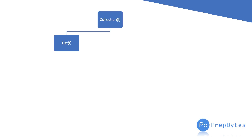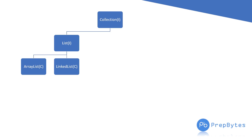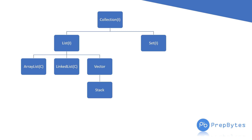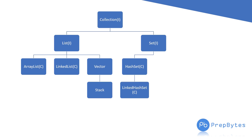Let's have a recap of what we have seen till now. We have seen the Collection interface, List interface, and the implementation classes of List interface: ArrayList, LinkedList, Vector, and Stack. We have also seen what is the Set interface and its implementation classes HashSet and LinkedHashSet.